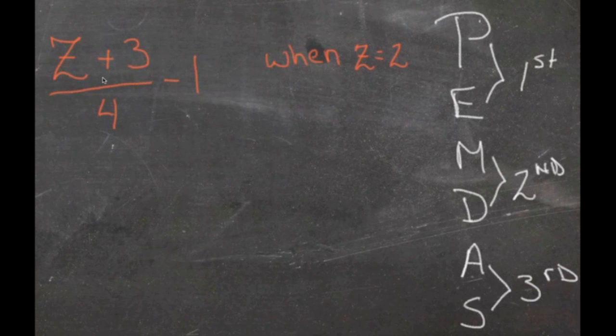In this example, we have z plus 3 divided by 4 minus 1, and we're evaluating it when z equals 2. So the first thing we'll do is substitute 2 in for z.